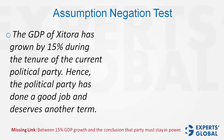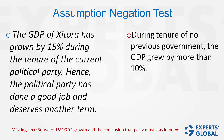One more example — the same argument, same missing link, a different answer choice. If you are not able to determine whether this is an assumption, negate it. The answer choice suggests that during the tenure of certain previous governments, the GDP grew by more than 15%, implying previous governments did not lead to higher growth. The negative would be that in the past, other governments led to higher growth. Does this completely make the argument void? No, because the fact that 15% is the highest-ever GDP growth is not a factor that must be true for the argument to hold.